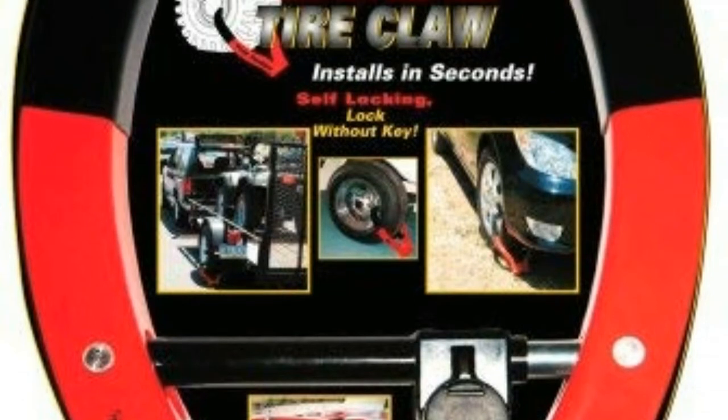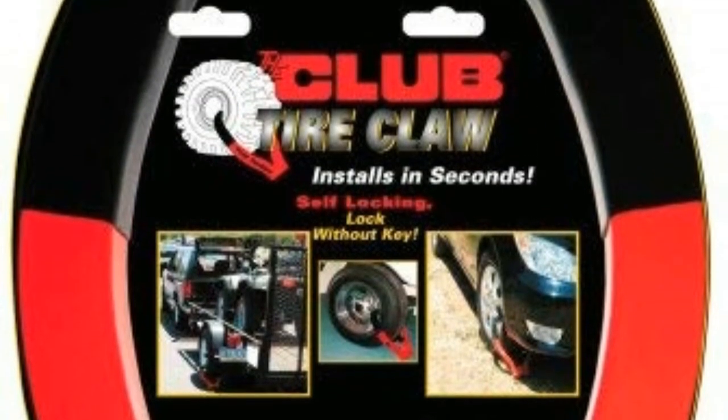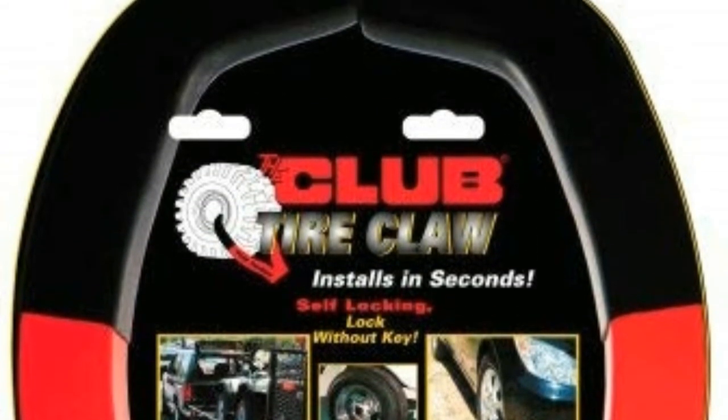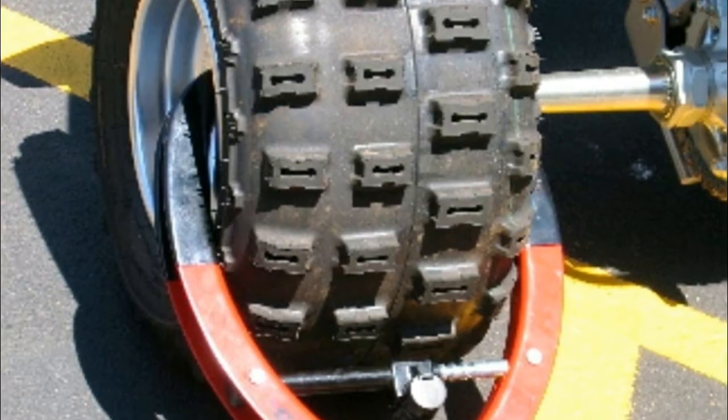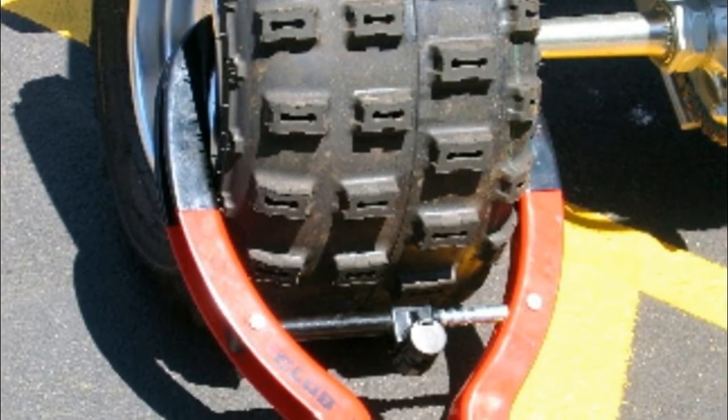The Club 491 Tire Claw Security Device offers an easy and secure way to protect your car, trailer, ATV, or motorcycle, from theft.